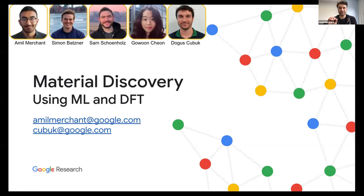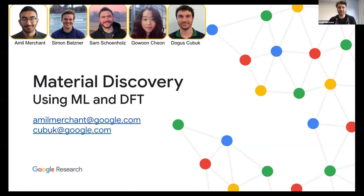Before I start the talk, let me quickly introduce the team. The two students who have done really amazing work here are Amiel Merchant — and you're lucky that Amiel actually made the trek from Stanford to be here, so he'll be presenting some of his own work. He actually did most of the work we'll be presenting today. Another student at Harvard, Simon Bassner, has also done amazing work, particularly on equivariant GNNs and ML molecular dynamic simulations. Sam and Gawun are long-term collaborators who contributed really nice things as well. Amiel was a resident at Google — that's how we started working together — and is now a PhD student at Stanford and a student researcher at Google.